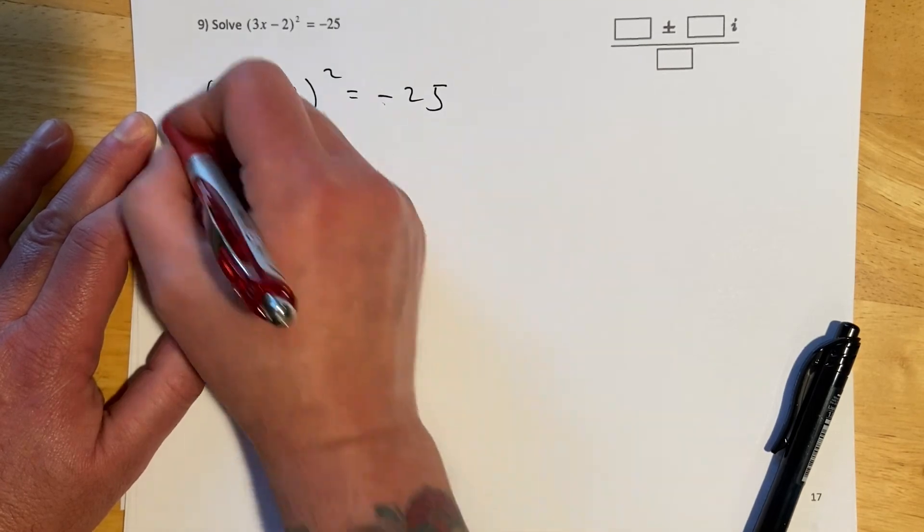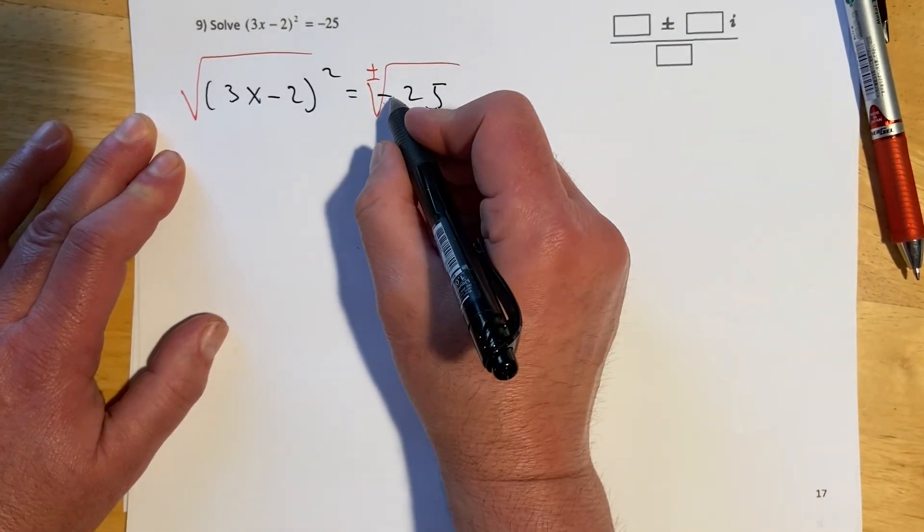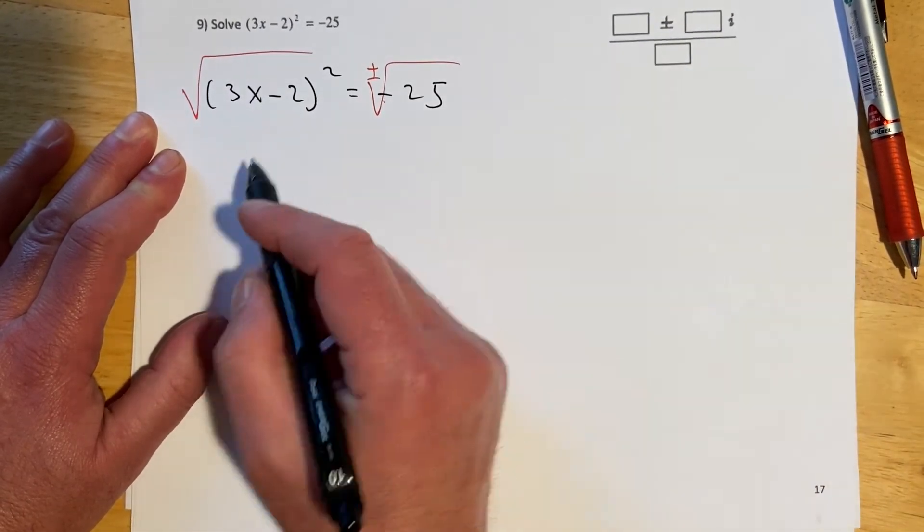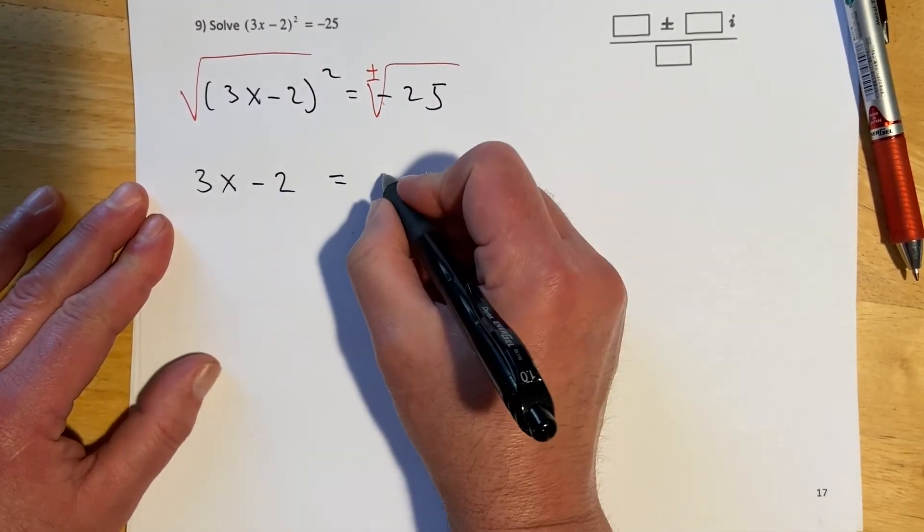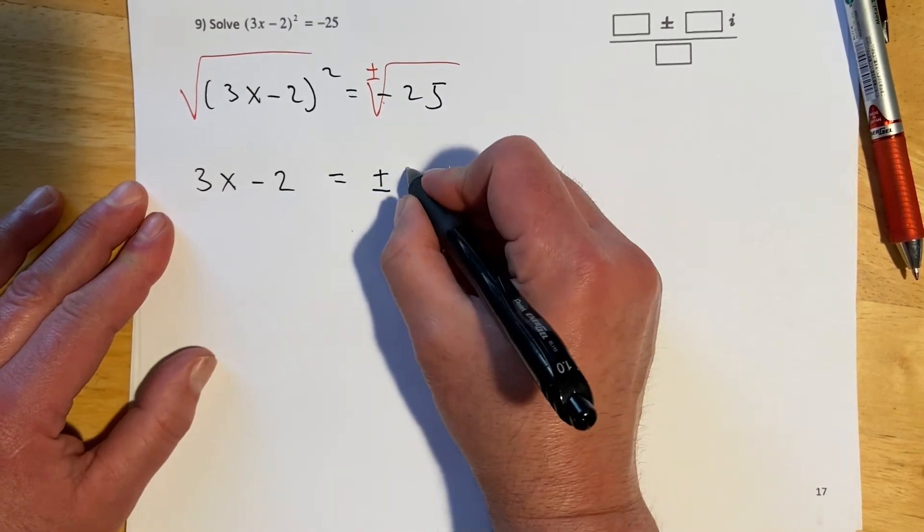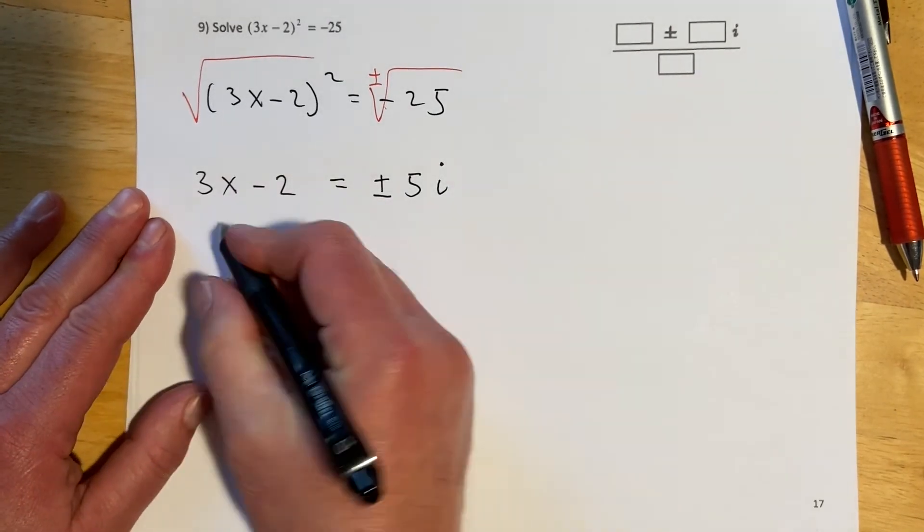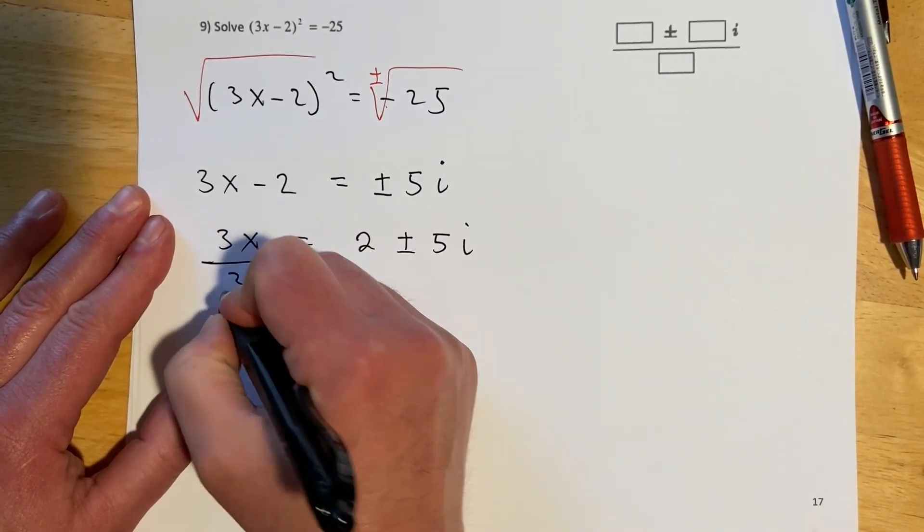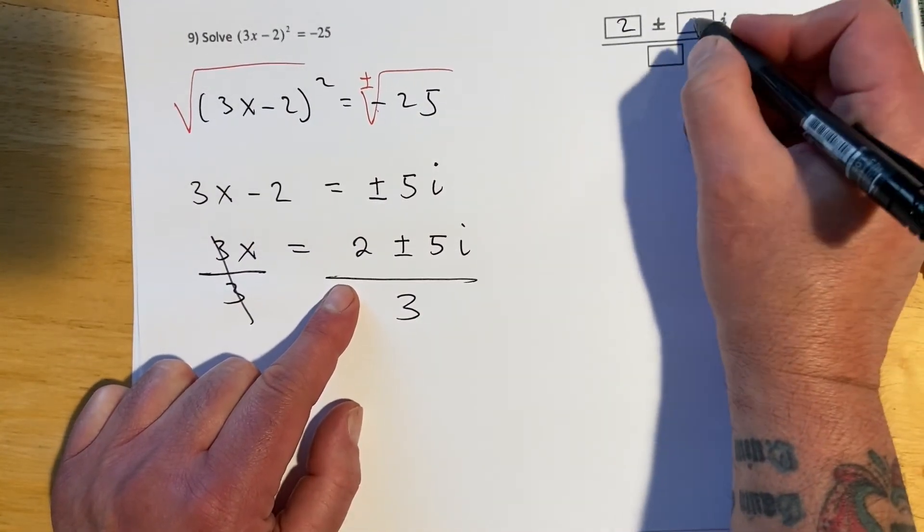This one's the same idea, except now we have a negative. So when I do the root and with the plus or minus, we're going to get imaginary numbers. And then our answer is going to have complex form, which actually makes it way easier to type. So this would be 3x - 2 = ± √(-25), which would be ± 5i. And now we'll add over our 2. 3x = 2 ± 5i. And then divide 3 for both sides. And you can see they have it all set up. The 2 just goes in this box, 5 there, and the 3 there.